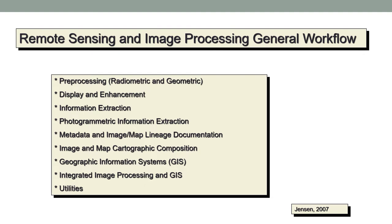It is very important to compile the metadata and image map lineage documentation — knowing the data provenance. Who took the data? Where did it come from? What kind of processing happened to it before it came to you? These are critical questions for a remote sensor. Image and map cartographic composition is also very important, including scale bars and legends, such that the import of the map is very clear. These maps can then be brought into geographic information systems for geospatial modeling.